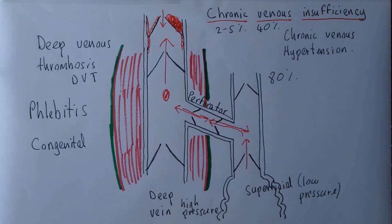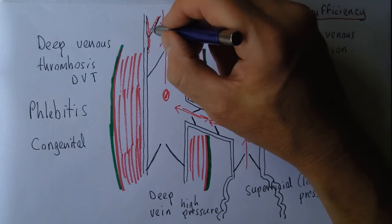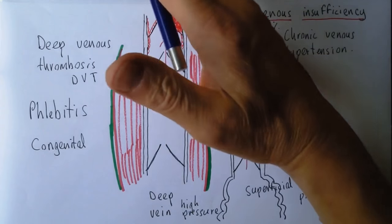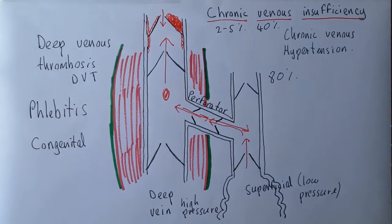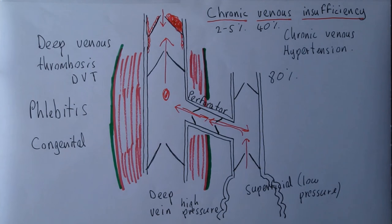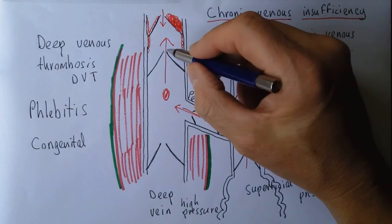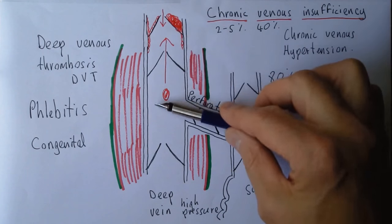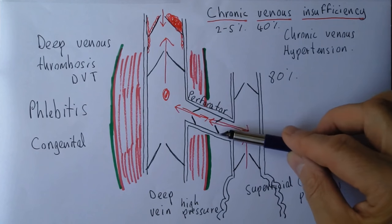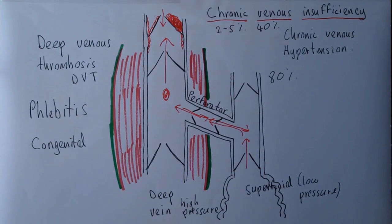These are common conditions that can lead to this syndrome because they damage the valves, increasing the pressure of the blood and causing regurgitation into the superficial venous system. Where the pathology begins doesn't matter too much — if it begins in a deep vein, the increased pressure there puts a lot of pressure on the perforator valves, and over time they will fail. We're going to get venous hypertension, particularly in the superficial veins, causing varicosity and other clinical features.